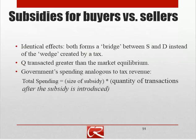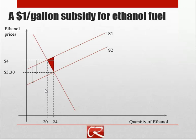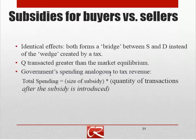Either type of subsidy — for a buyer or a seller — forms a kind of bridge between the price customers pay and the price sellers receive. This is in contrast to the tax, which created a wedge between those two and caused quantity to fall, whereas the subsidy causes quantity to grow. The government spending here is analogous to tax revenue: the total spending on the subsidy is the subsidy per transaction times the quantity of transactions after the subsidy is introduced.